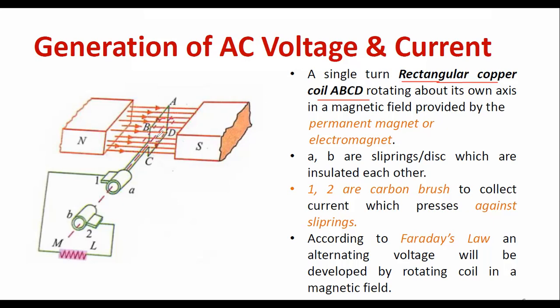In between the poles, you keep a rectangular copper coil and try to rotate it at an angular frequency of omega. You can also see slip rings A and B, and brushes one and two, which are made of carbon. Current is collected with the help of the carbon brushes, and if you connect a resistor, current will flow through the resistive load.